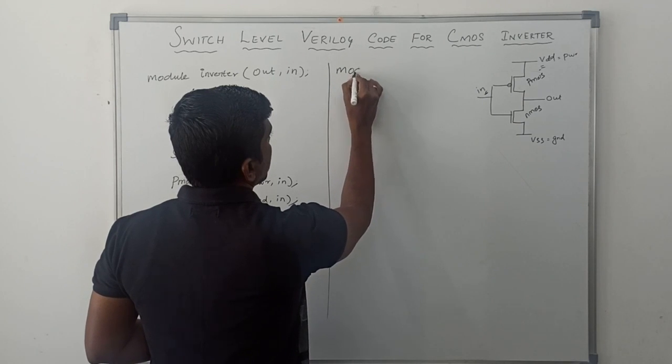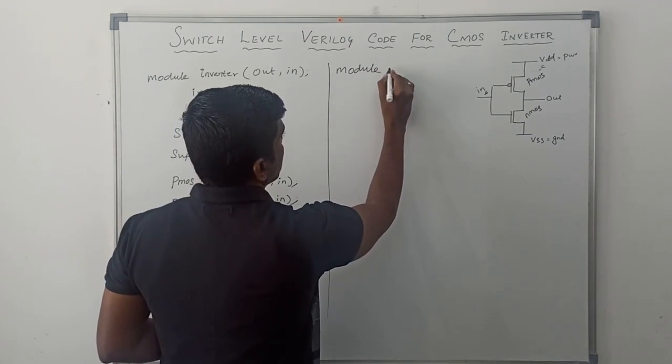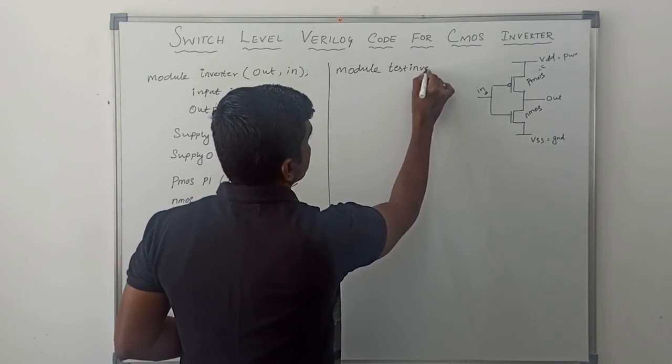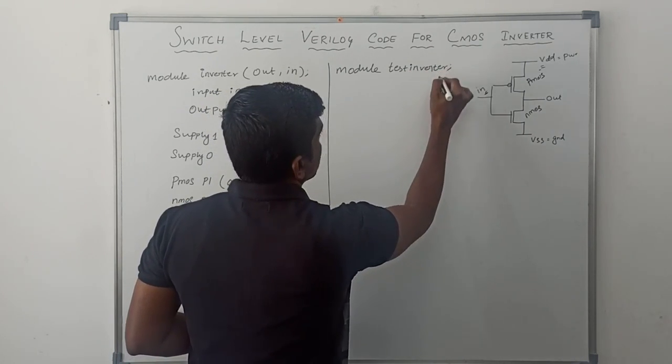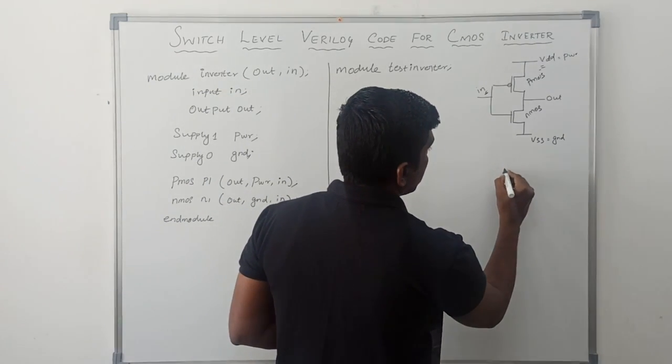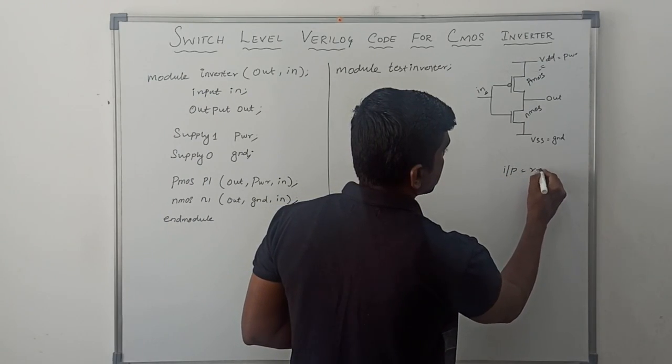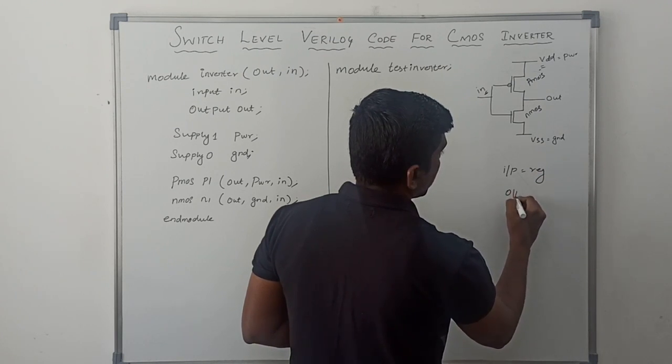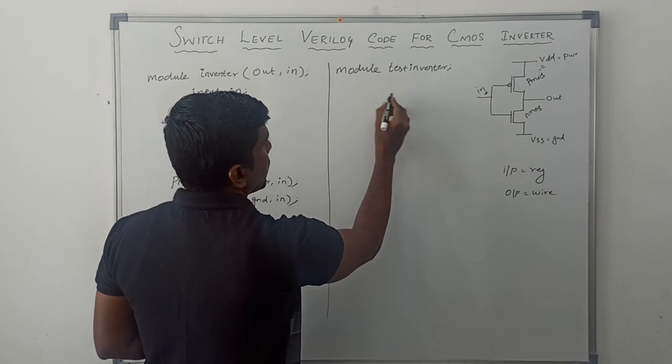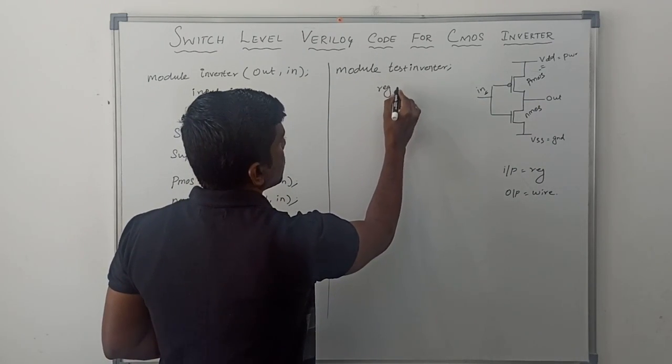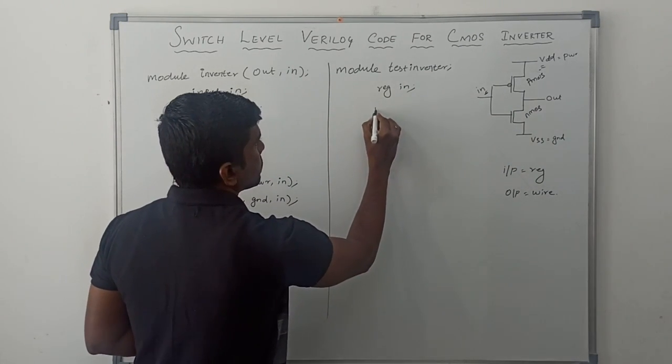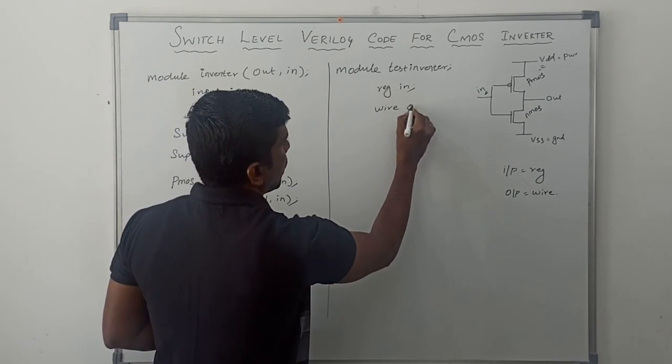Now I am going to write the testbench code for this CMOS inverter. As usual, you write module, then module name test inverter. As I already told, input variable declare as register, output variable declare as wire. So here input variable is in, reg in. Then output variable declare as wire, wire out.